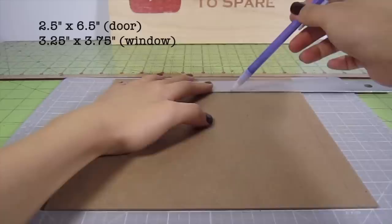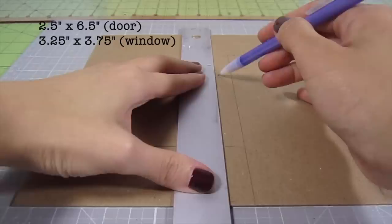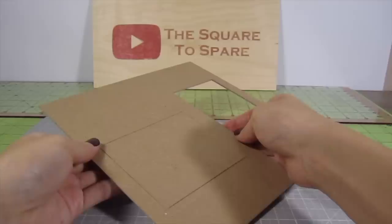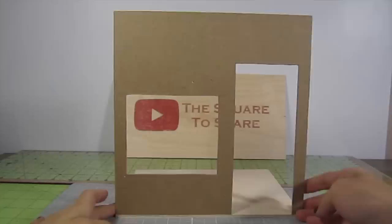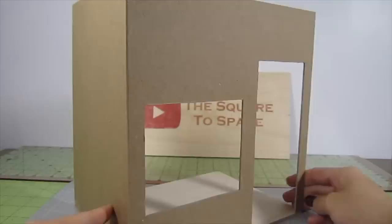Cut a 2.5 by 6.5 inch rectangle on the right hand side for the door, and a 3.25 by 3.34 inch rectangle on the left side for the window. I use ordinary wood glue to position these pieces in place. Here is the structure all complete. It's super simple.